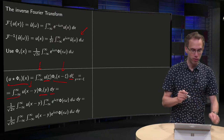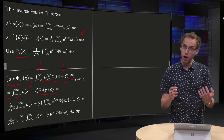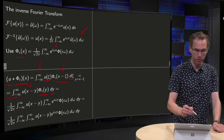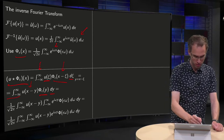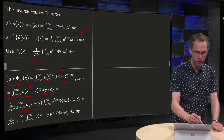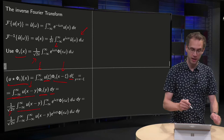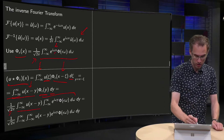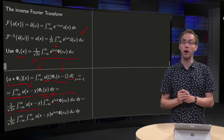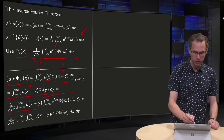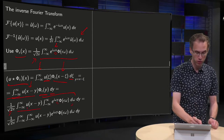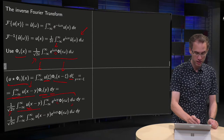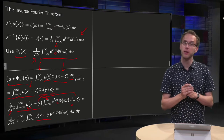Now we use our formula for φ_ε(x) with argument y, giving φ_ε(y). We bring in the factor of 1/√(2π) and the integral with respect to ω, replacing x with y in the exponent. Then we observe that u(x − y) is constant with respect to the integral over ω, so we can take it inside the integral.